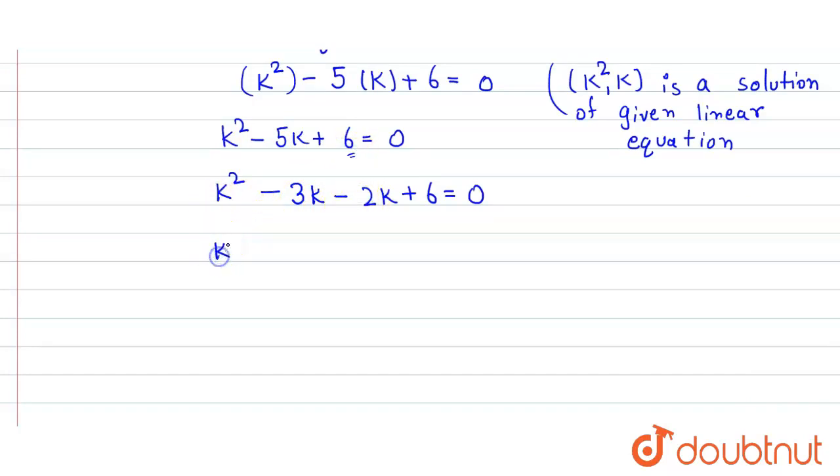So now we take k common from these two terms. So it will be k times (k minus 3), here we take minus 2 common. So in bracket we get k minus 3 and that equals 0. So we get (k minus 3)(k minus 2) equals 0.